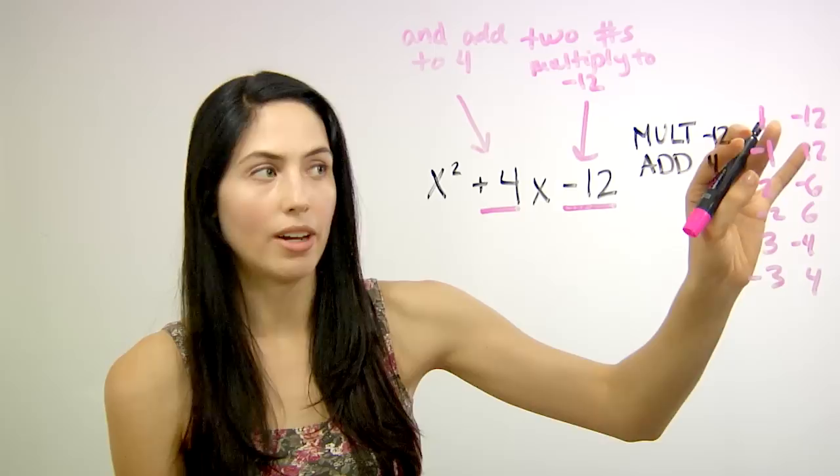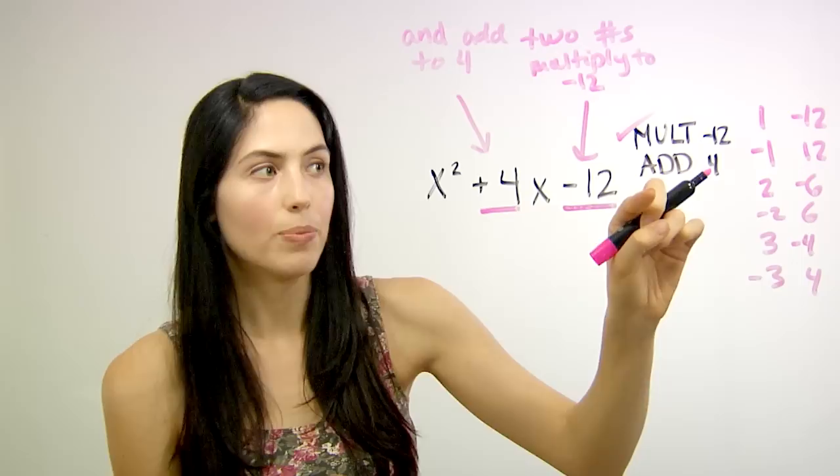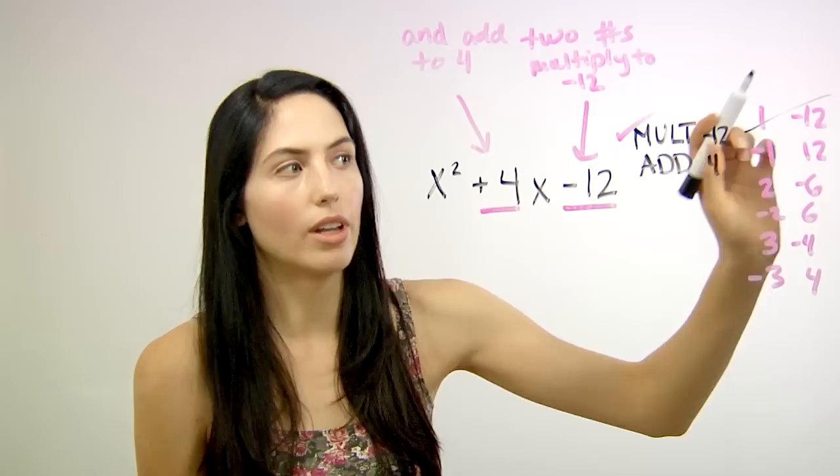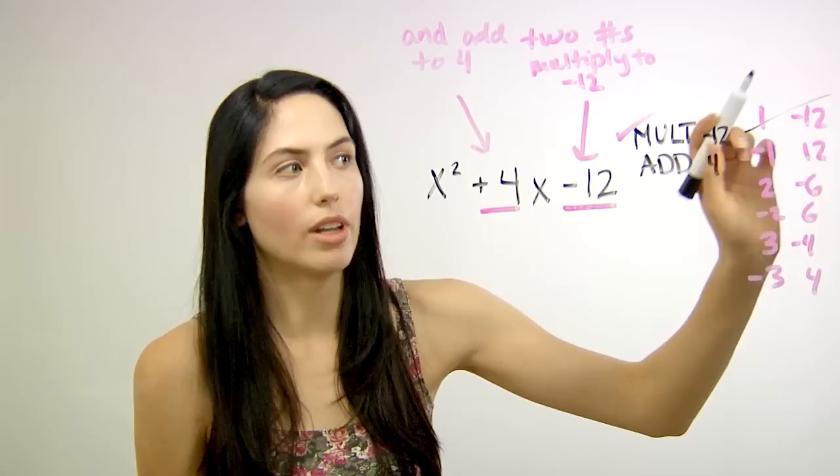So you've taken care of that requirement now. You need to figure out which of these pairs would also add to positive 4. So check all of them. 1 plus negative 12 would give you some big negative number, like negative 11. Rule it out. Negative 1 plus 12 would give you positive 11. No.